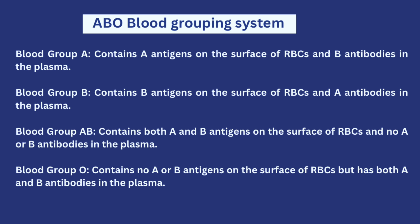Blood group B contains B antigens on the surface of the red blood cells and A antibodies in the plasma. Blood group AB contains both antigen A and B on the surface of the red blood cells but no A or B antibodies in the plasma. Blood group O contains no A or B antigen on the red blood cells but has both A and B antibodies in the plasma. These are the four major classifications derived from the ABO blood grouping system.